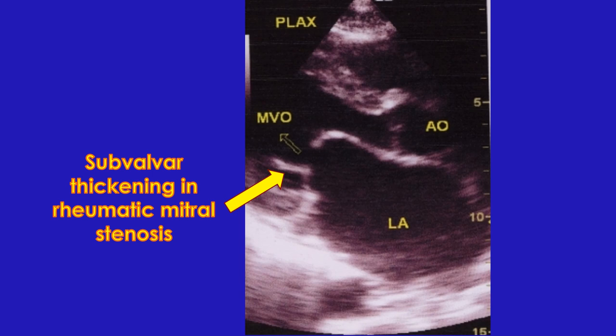Atrioventricular valves can prolapse into the atria during systole, producing regurgitation. In mitral valve prolapse, the valve may also be thickened due to myxomatous deposits. In elderly with degenerative mitral valve disease and in those with chronic kidney disease, the mitral annulus may be grossly thickened and calcified.